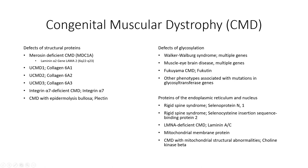It is important to understand that there are variations in the frequency of certain congenital muscular dystrophies between different ethnic groups. Worldwide, the most common variant is merosin-deficient CMD, accounting for up to 40% of all cases in some countries. In Japan, however, a specific variant first described in 1960 is considered one of the most common autosomal recessive disorders in the country, with an incidence rate that approaches half of what is seen for Duchenne muscular dystrophy. The disease was named Fukuyama CMD for the physician that first characterized it.